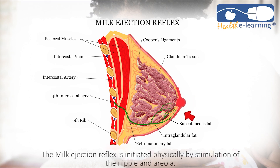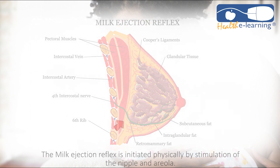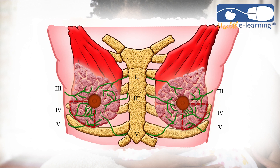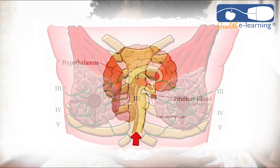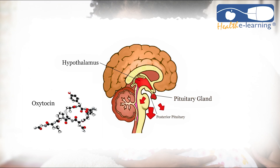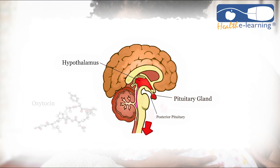The milk ejection reflex is initiated physically by stimulation of the nipple and areola. The nerve impulse travels to the hypothalamus, which causes the posterior pituitary gland to release the hormone oxytocin into the bloodstream.